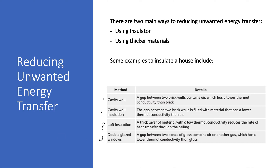Finally, double glazing windows allow less energy to be released from the house. This is the gap between two panes of glass containing air or another gas which has a lower thermal conductivity than glass. Double glazed windows can also use other materials besides standard glass, and they reduce thermal conductivity entering or leaving the home.